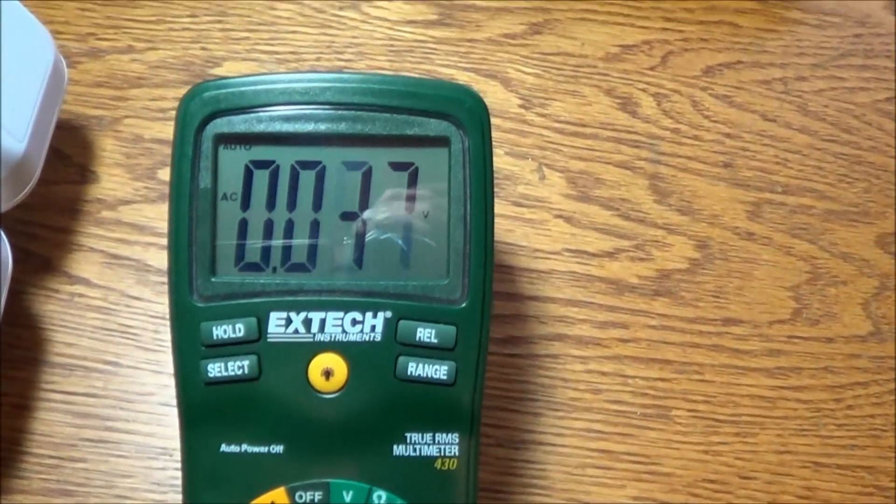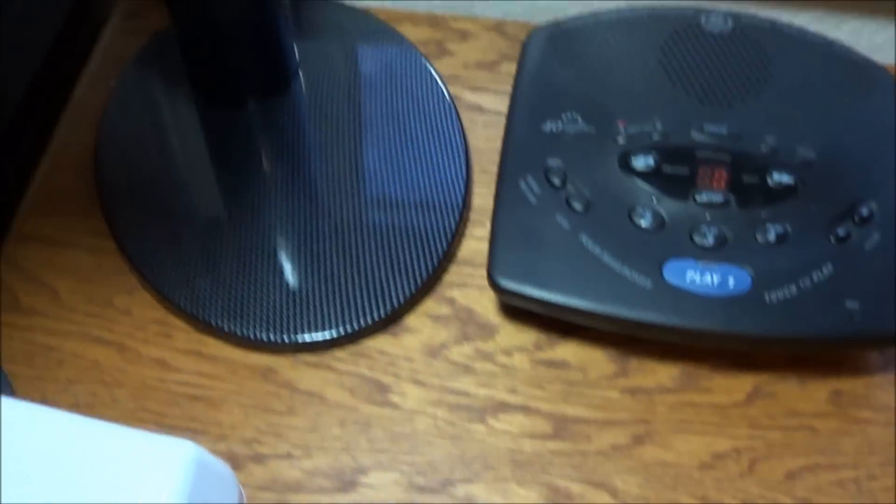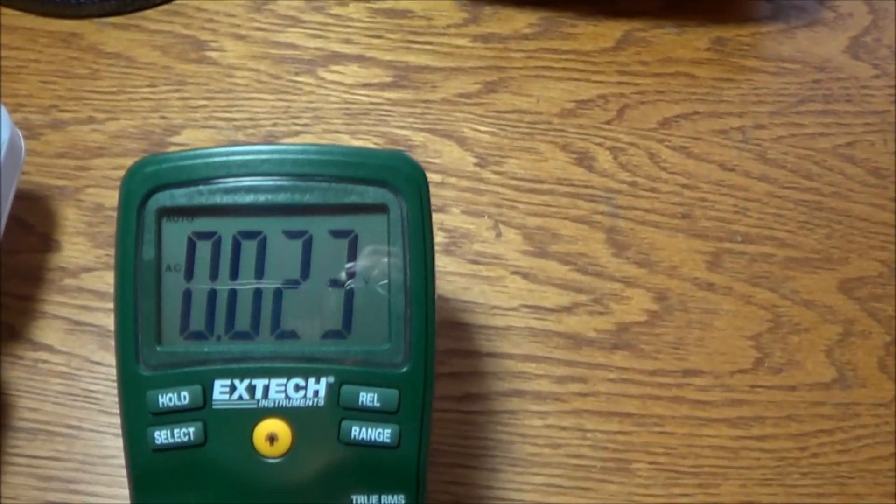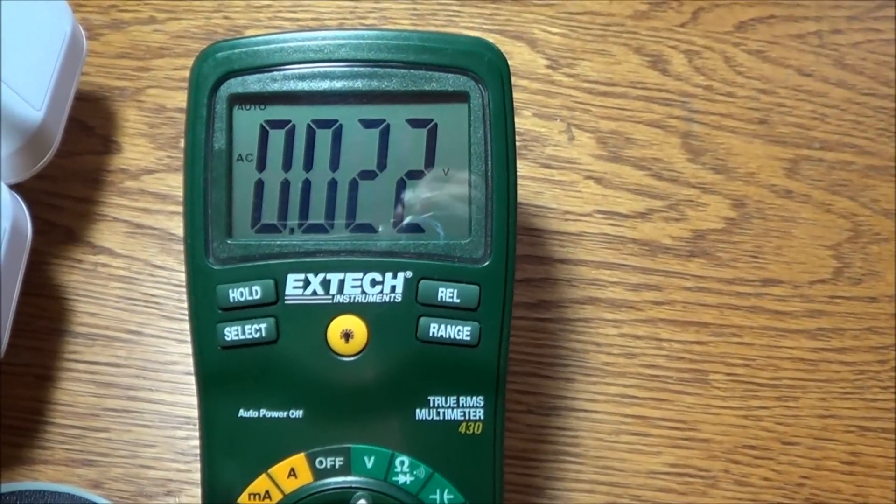Now, I'm going to step onto the grounding pad here, and immediately you see, even while I'm being exposed to the electrical fields here on the lamp, my body voltage has gone down to 22 millivolts.